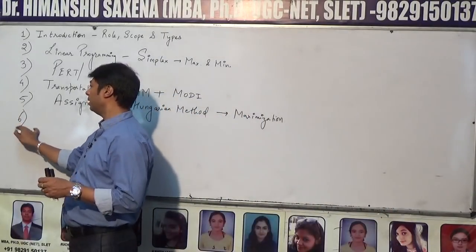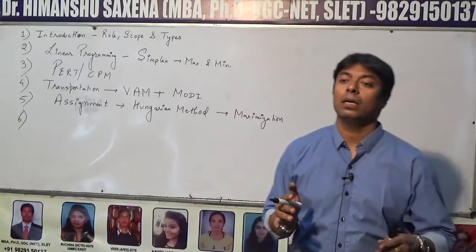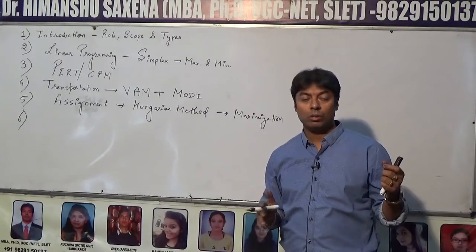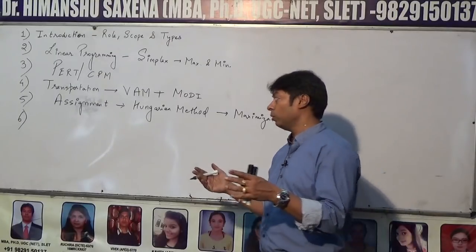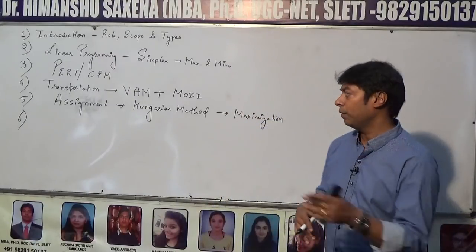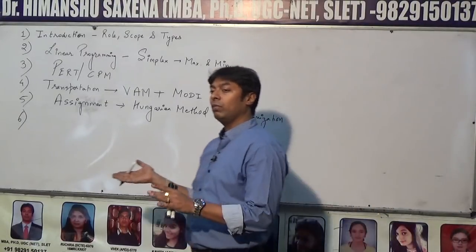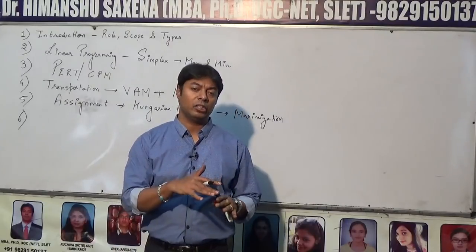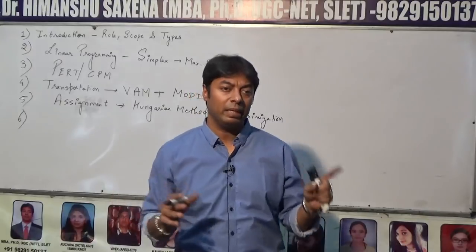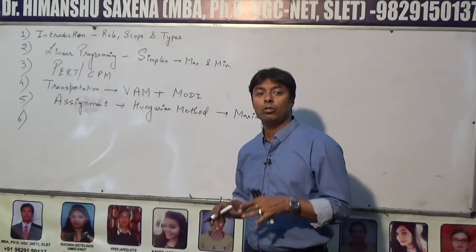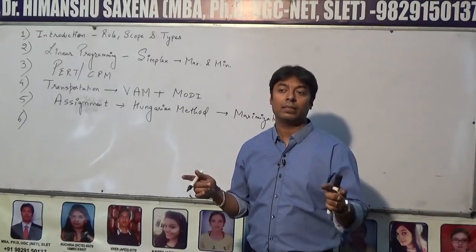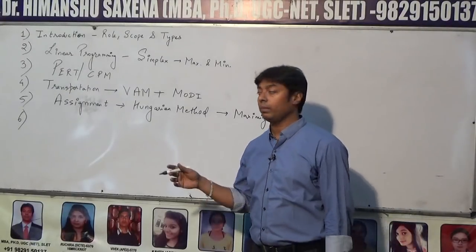Unbalanced cases — where we balance the whole matrix by adding dummy rows or dummy columns — are also important. You can get a mixed case involving both maximization and unbalanced conditions. First, convert the whole case into a minimization case, then add a dummy row or column to balance it, and solve it normally.